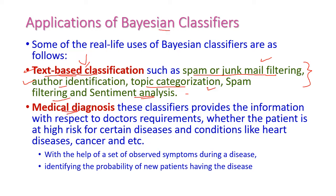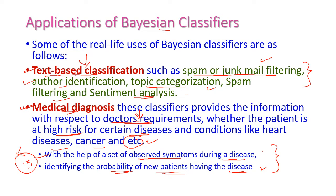The next application is the medical diagnosis system. It provides information with respect to the doctor's requirements. Based on the doctor's requirement, the Bayesian classifier will provide the required information on whether a patient is at high risk of a certain disease, such as heart disease or cancer. With observed symptoms during the disease, we can easily identify the probability of a new patient having the same disease.